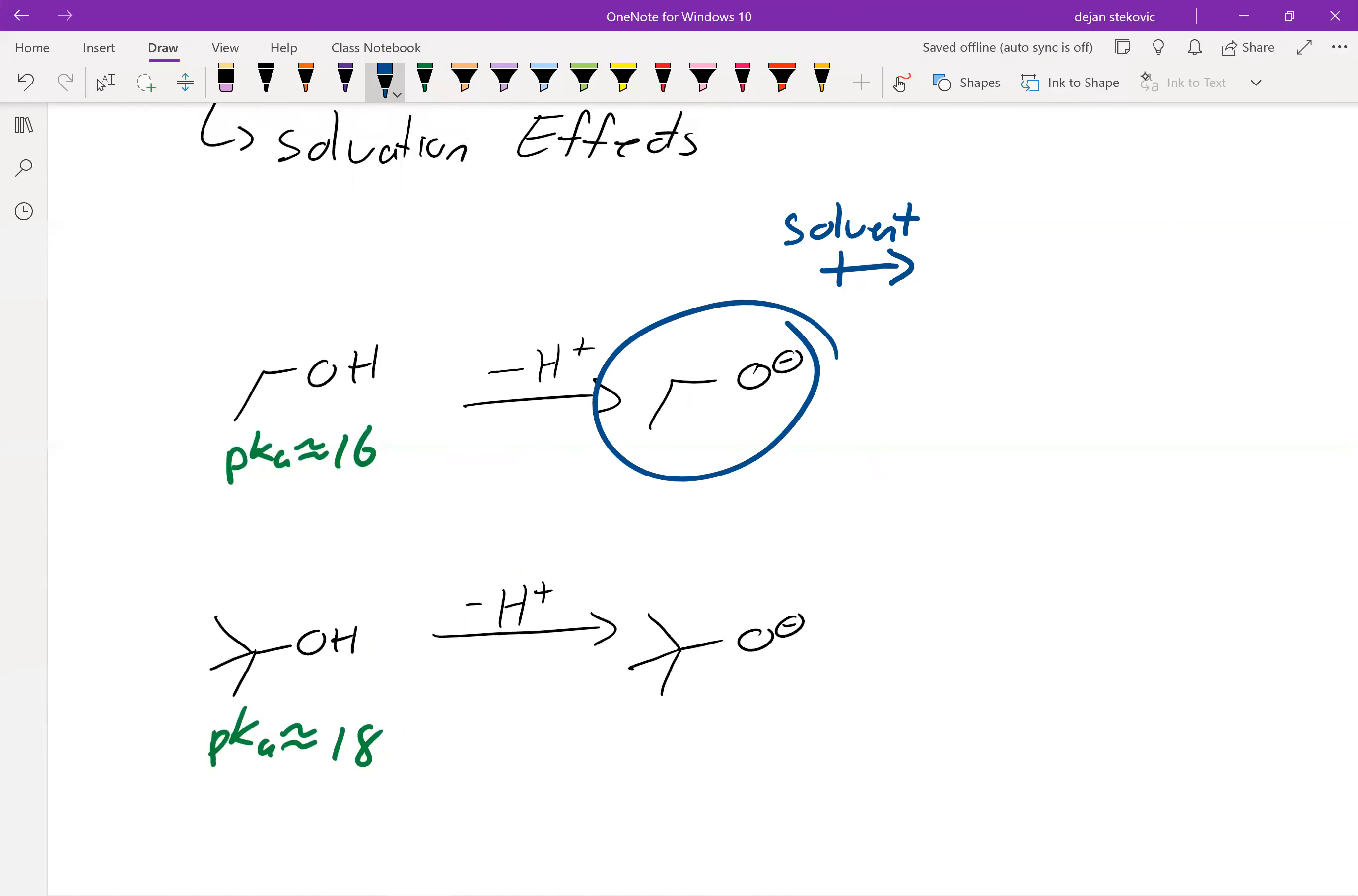And so basically with this top compound, it's less sterically hindered. And so this negative charge can be surrounded by more solvent molecules than the bottom one. This bottom one has all of the steric bulk. Don't forget that there are kind of hydrogens here. And so you can't fit as many solvent molecules around this negative charge.